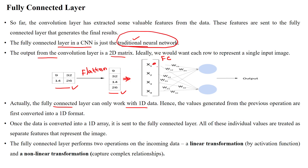The fully connected layer has inputs — input 1, input 2, input 3, input 4. For example, here we have 4 pixel values. These inputs are sent to the neurons available in the fully connected layer, where each and every input connects with every neuron. The fully connected layer performs operations using information from the feature maps generated in the hidden layers.